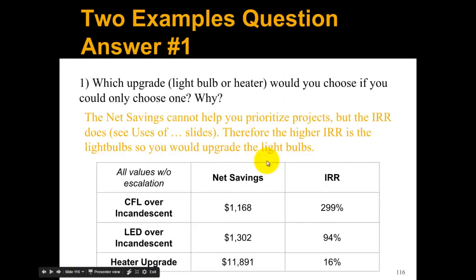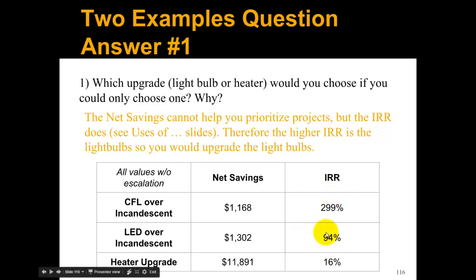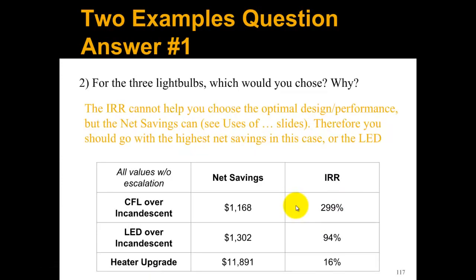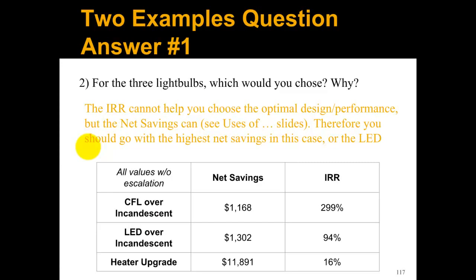Looking at the results: the net savings for CFL over incandescent and LED over incandescent might be lower than the heating upgrade, but the IRR is highest for the light bulb replacement. So when looking at project priority, you use the IRR — and since IRR is higher for the light bulb replacement, that's what you should go with. Now for choosing among the three light bulb options, you can't use IRR because this is an optimal design performance question. You have to use net savings, and in this case you would choose LED over incandescent.